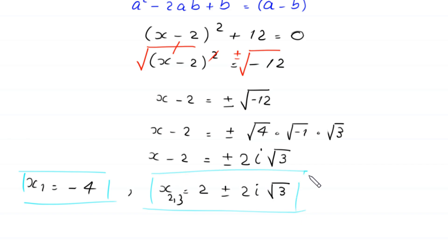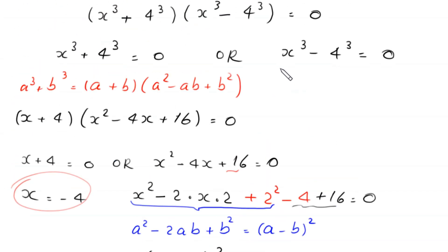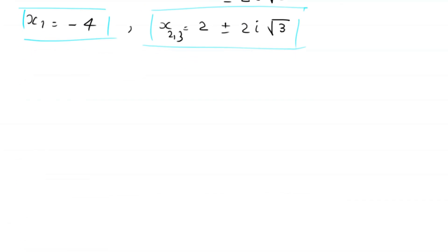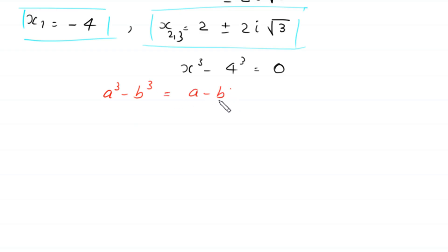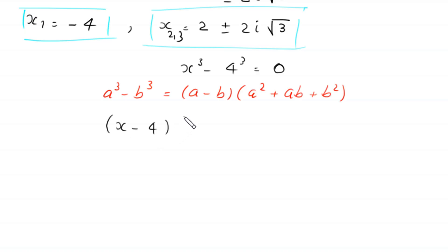Now we solve the second case. We have x cubed minus 4 cubed equals 0. We use the difference of cubes identity: a cubed minus b cubed equals (a − b)(a² + ab + b²). So x³ − 4³ becomes (x − 4)(x² + 4x + 16) equals 0.